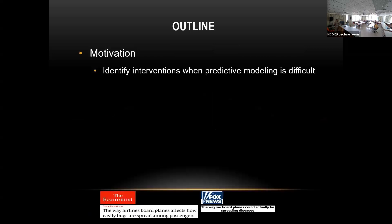Our motivation is to identify public health interventions when predictive modeling is difficult. Predictive modeling is hard because humans are unpredictable — humans have free will, they do unexpected things. So even if we get all epistemic uncertainties under control, we are still left with inherent uncertainty that we can't deal with.